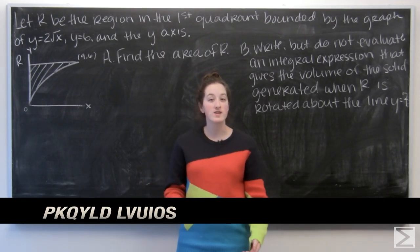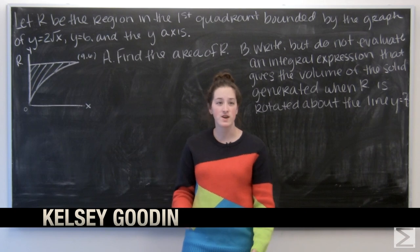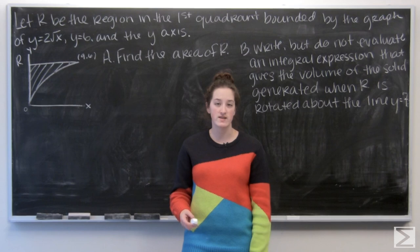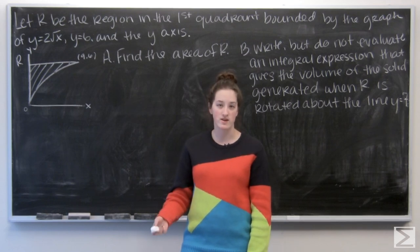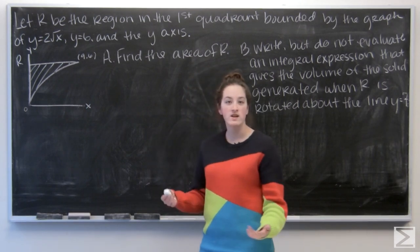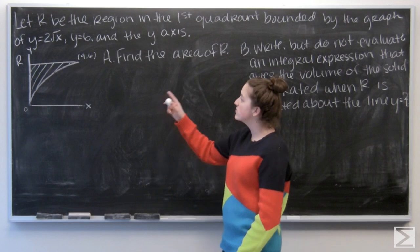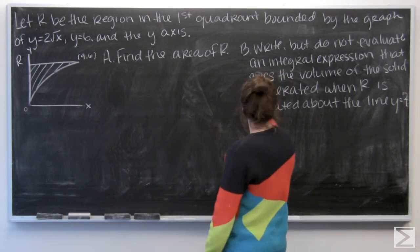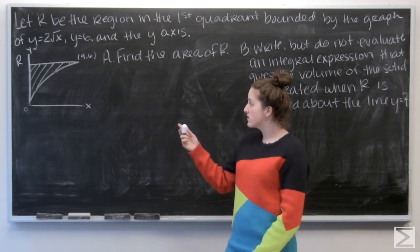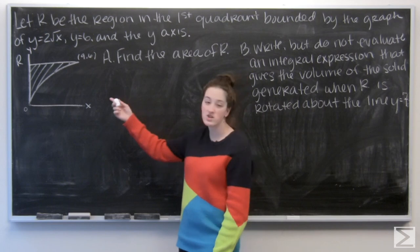In this video we're going to be looking at a free response question from the AP Calc exam. This question was on the exam in 2010, both on the AB and BC versions of the test, and it was one of the no-calculator questions. We have a couple parts. The introduction gives us a region R in the first quadrant bounded by y equals 2 square roots of x, y equals 6, and the y-axis, along with a picture of the region.